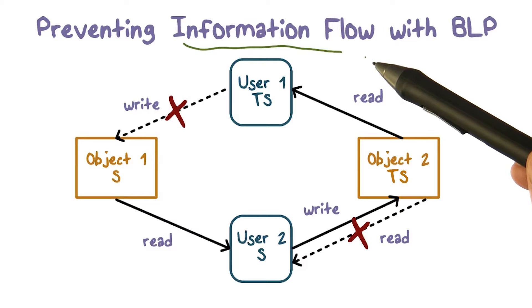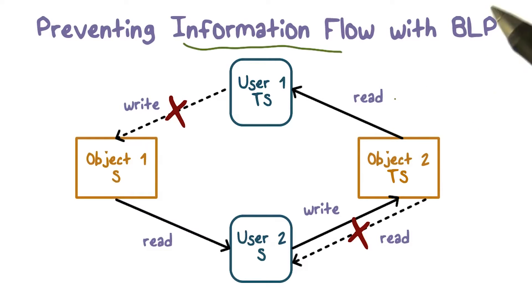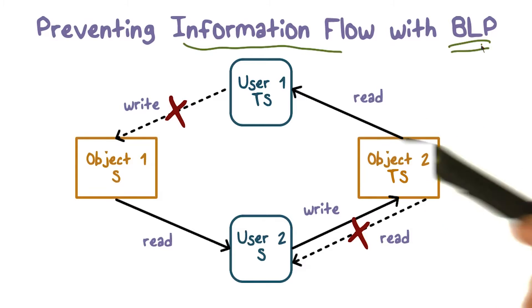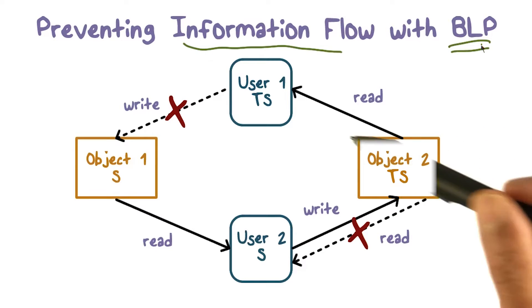So we want to see how mandatory access control, or MAC, or multi-level security, in particular the BLP model that we are focusing on. And so how does the BLP model help us solve that information flow problem that we had?